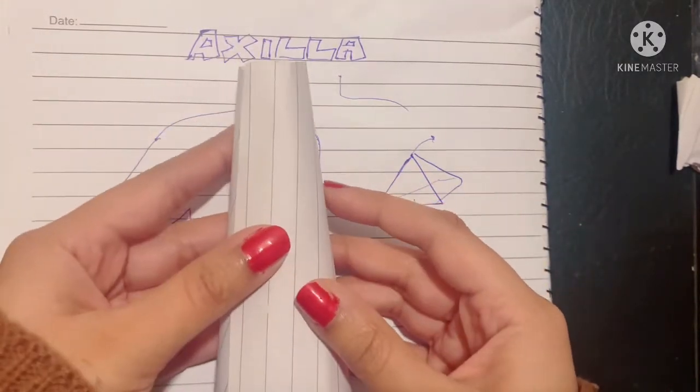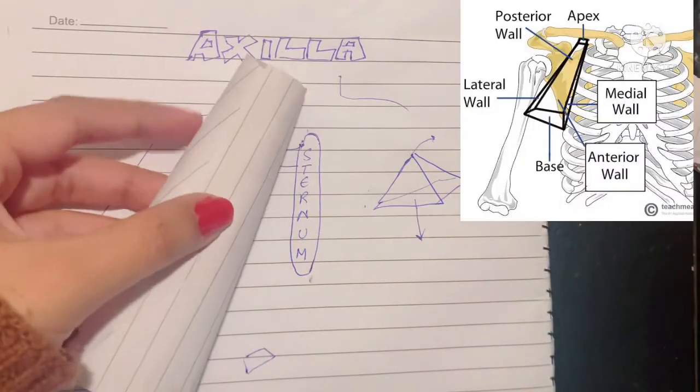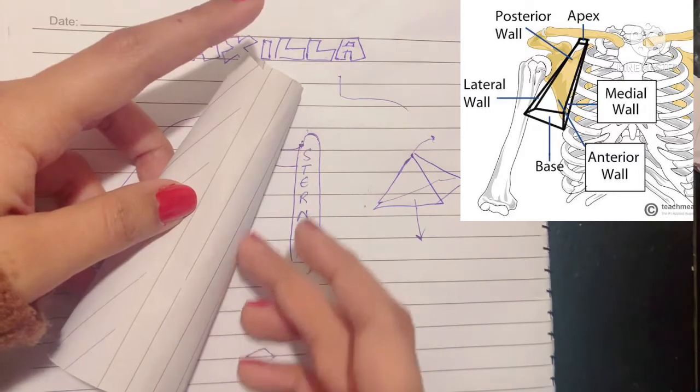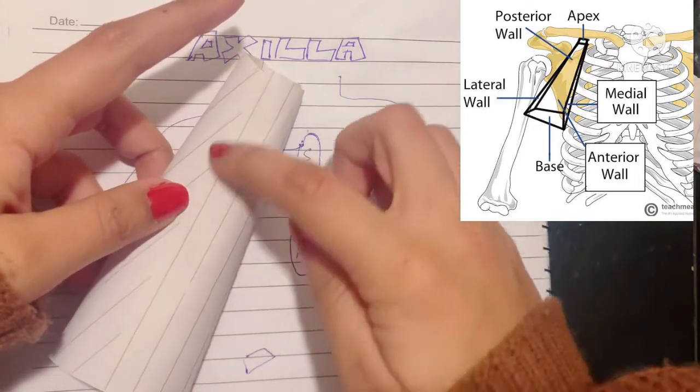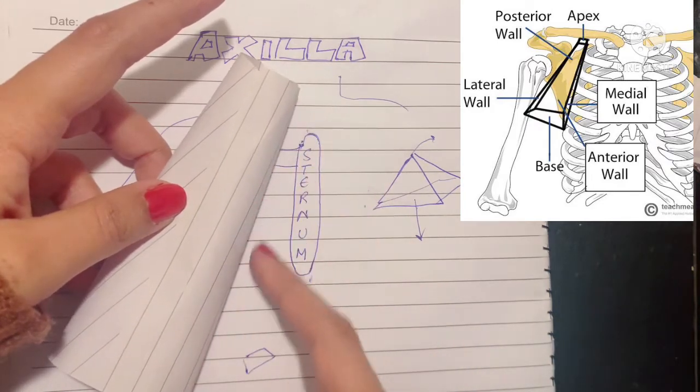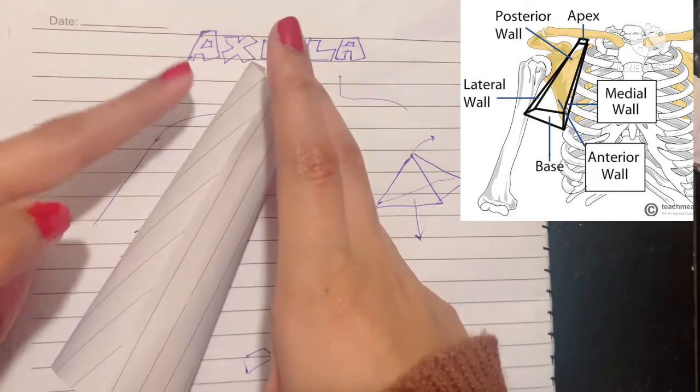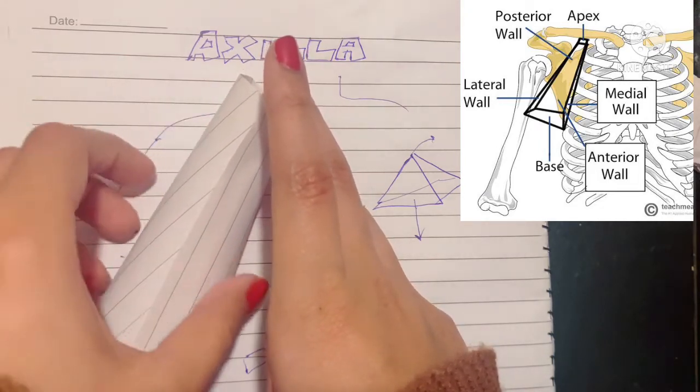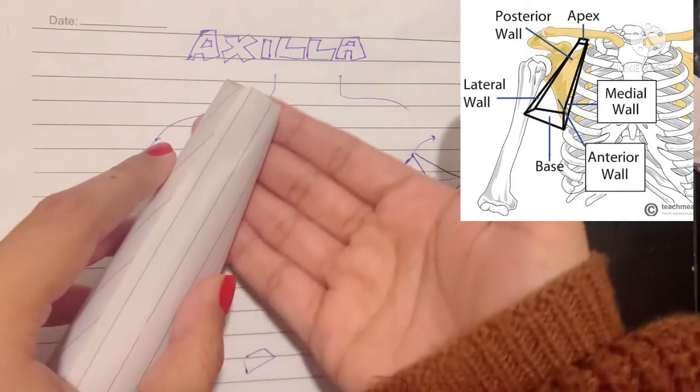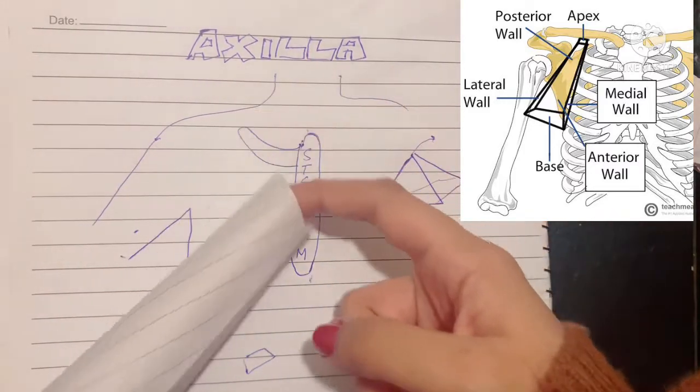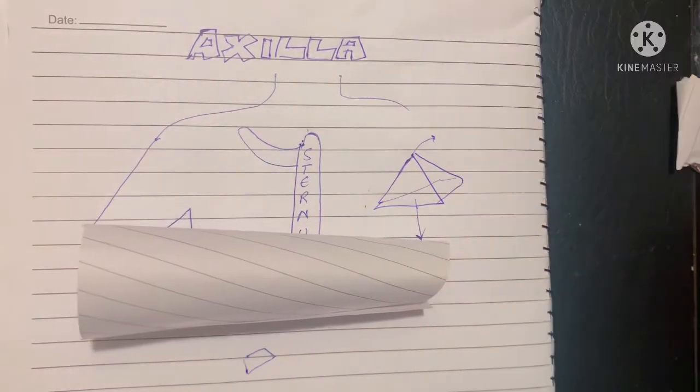Then it has four walls. The apex is directed upwards and medially. The four walls are the anterior wall facing the front, the medial wall facing the ribs and the sternum, the lateral wall facing the humerus, and finally the posterior wall that is close to the scapula. So that is a basic understanding of axillary space and the shape of it.